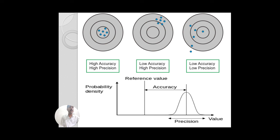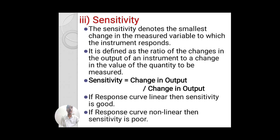So those diagrams clarify accuracy and precision. Accuracy relates to closeness to the center — the standard, specified, or true value. Precision refers to the range or span of observations — how close the observations are to each other. That is precision. You should now be clear on accuracy and precision.